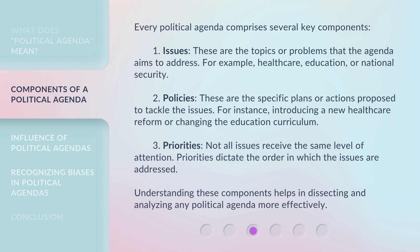Every political agenda comprises several key components. First, Issues — these are the topics or problems that the agenda aims to address, for example, health care, education, or national security. Second, Policies — these are the specific plans or actions proposed to tackle the issues, such as introducing a new health care reform or changing the education curriculum. Third, Priorities — not all issues receive the same level of attention; priorities dictate the order in which the issues are addressed. Understanding these components helps in dissecting and analyzing any political agenda more effectively.